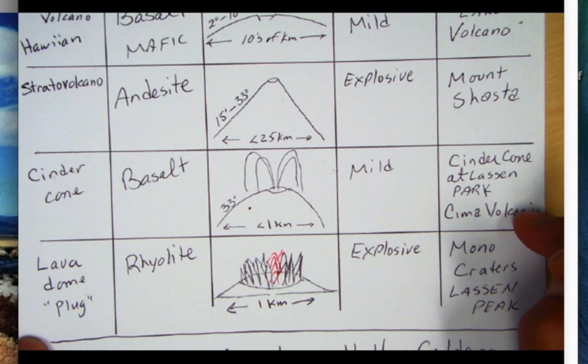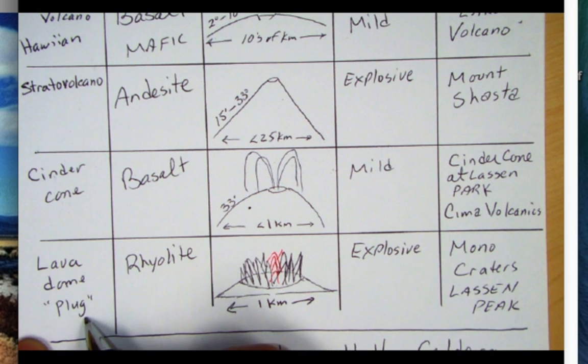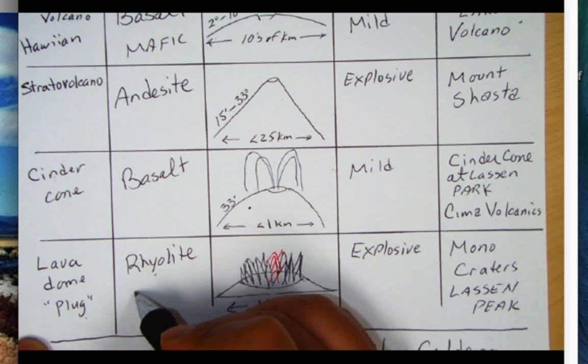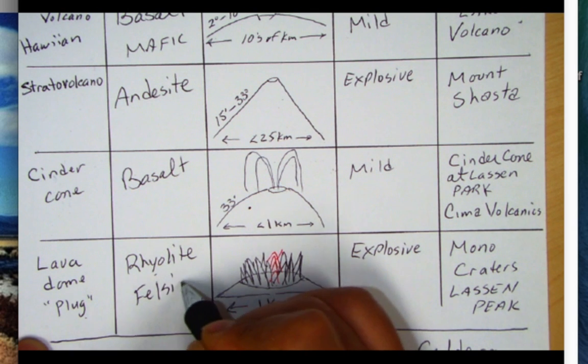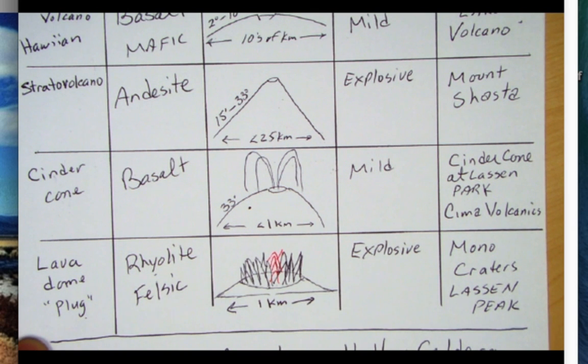Now for the lava dome sometimes it's called a plug. The key thing about this is it's going to be a felsic volcanic dome. It's so viscous that it tends to pile up right over the vent. This is the only volcano that lava tends to pile right in the vent and because it is felsic it tends to trap the gas more before eruption.